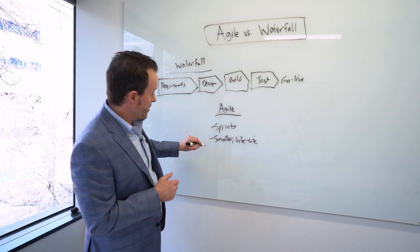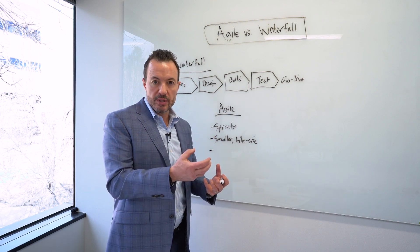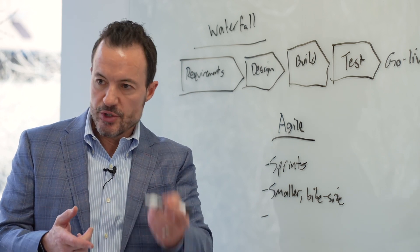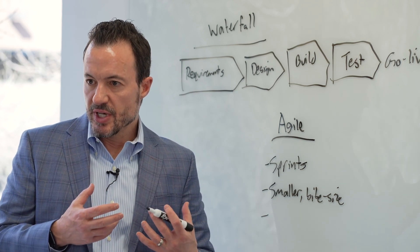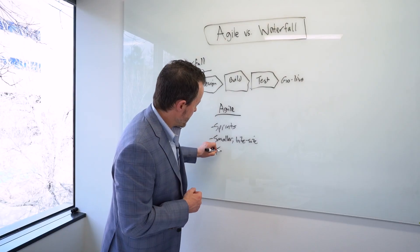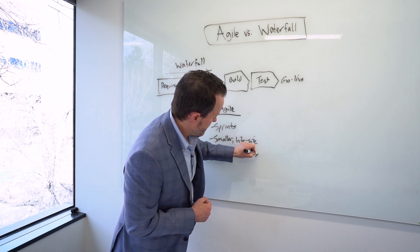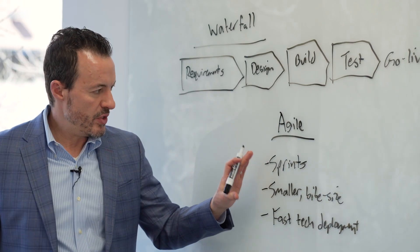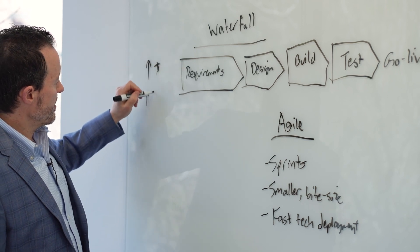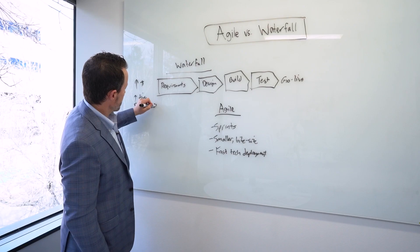The key here is really to get technology into end users' hands as quickly as possible so they can start using the software. If there are adjustments needed or problems with the deployment, there's a feedback loop back to the project team to make adjustments, learn from that, and move on to later stages. The key is fast tech deployment. In theory, this sounds great — it seems like it will solve the problems of high dollars, high time, and delayed ROI that come with waterfall.